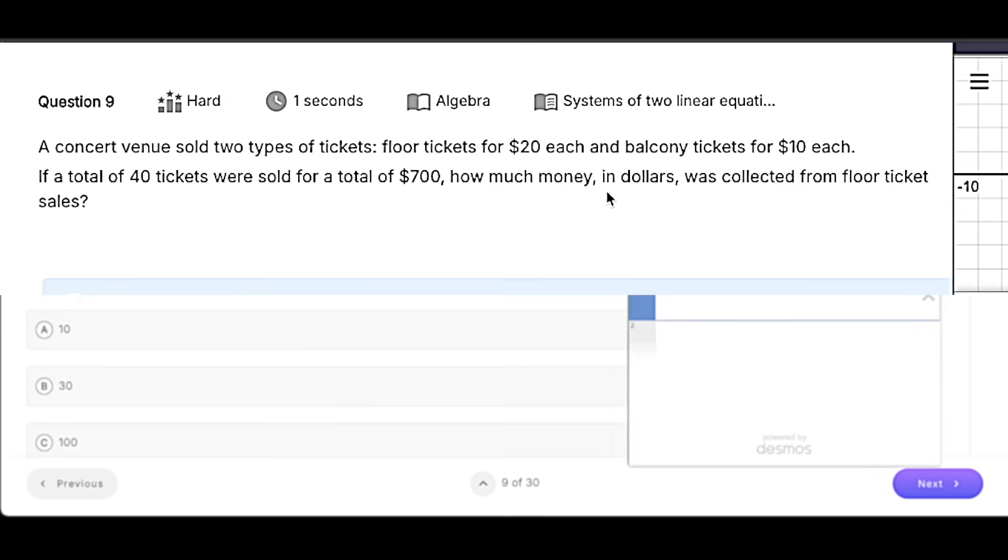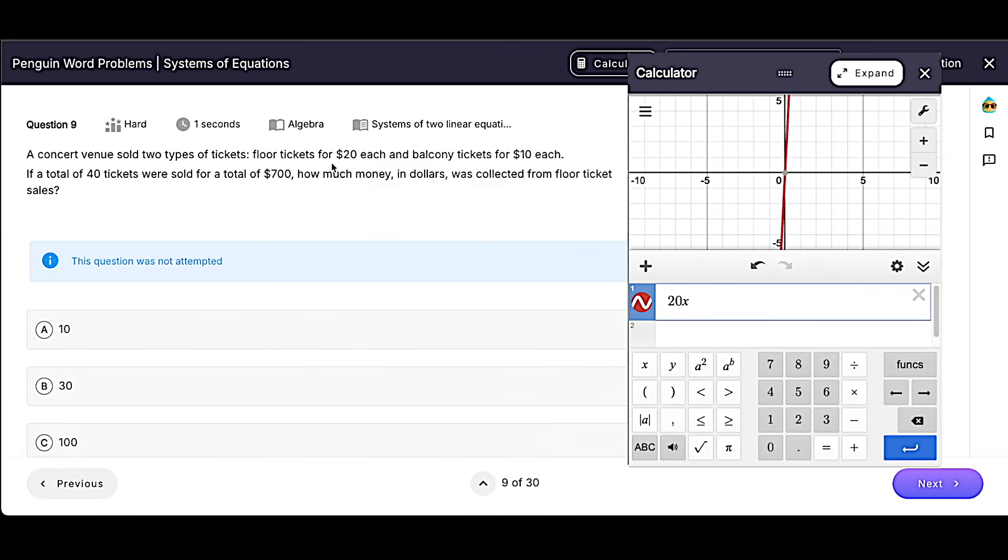We've got floor tickets and we've got balcony tickets. So I'll say floor tickets are X. So we'll say 20X because they're $20 each plus 10Y. And then they do give us a total of $700 for the value. They also give us a total of 40 tickets. And remember, that would just be X plus Y because X and Y are the number of each ticket.